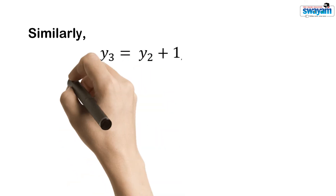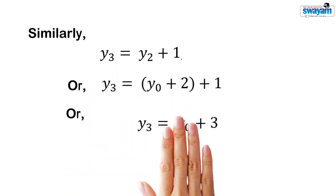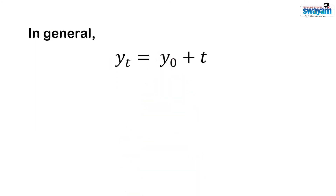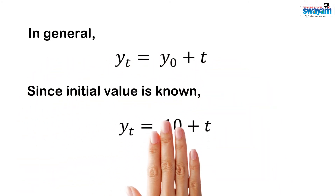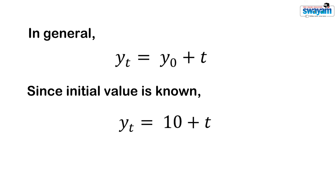Similarly y3 is equal to y0 plus 3. Using the same logic we get y4 equal to y0 plus 4. In general we may write yt is equal to y0 plus t. Since we know the initial value as y0 equal to 10, we can write yt is equal to 10 plus t. This means if the initial value of the unknown variable is known then we can find the value of the unknown at any period. This is the solution of the first order difference equation when the initial value is known.